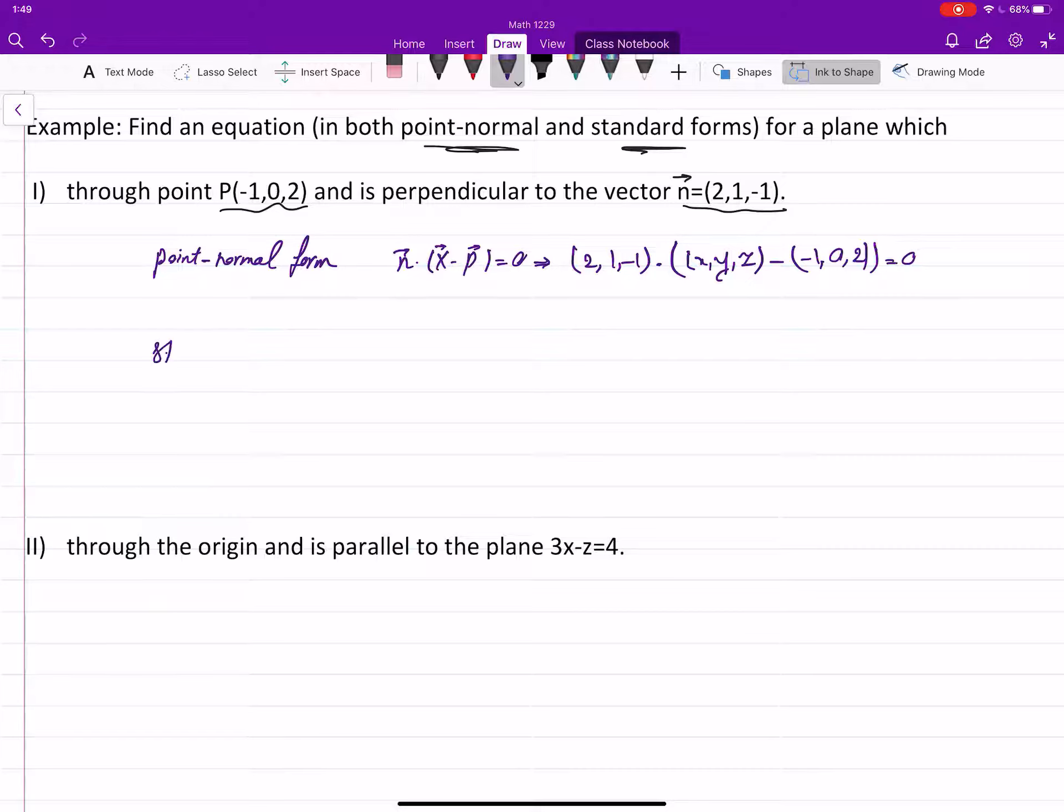How about the standard form? Standard form, you start with this equation: n·x = n·p. Then perform the dot product or expand the dot product: (2, 1, -1)·(x, y, z) = (2, 1, -1)·(-1, 0, 2).